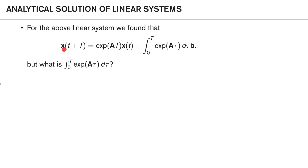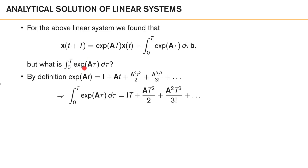The continuous state at time t plus T is the previous state at time t multiplied by e to the power of A times T, plus this integral multiplied by vector b. The integral can be solved using the Taylor series expansion of the matrix exponential: I plus At plus A squared t squared divided by 2 plus A cubed t cubed divided by 3 factorial and so on. Integrating from 0 to T gives I times T plus A times T squared divided by 2 plus A squared times T cubed divided by 3 factorial and so on. This is the analytical solution to the integral.